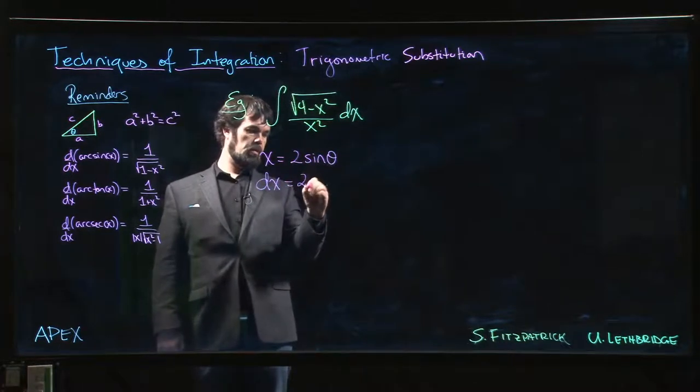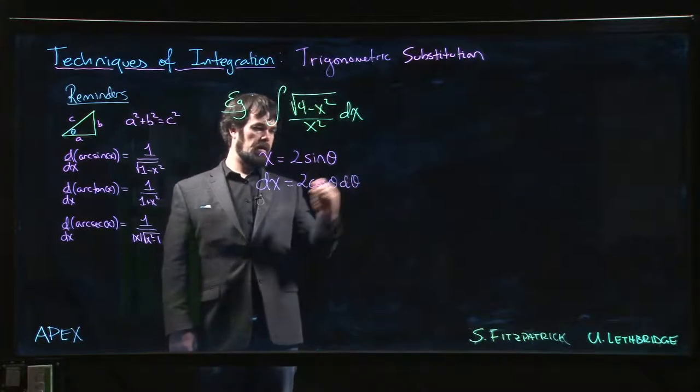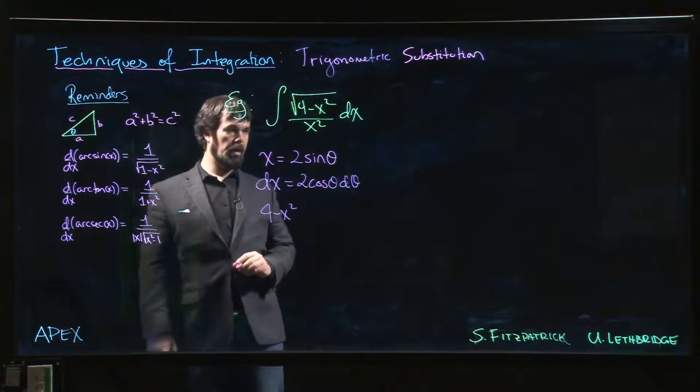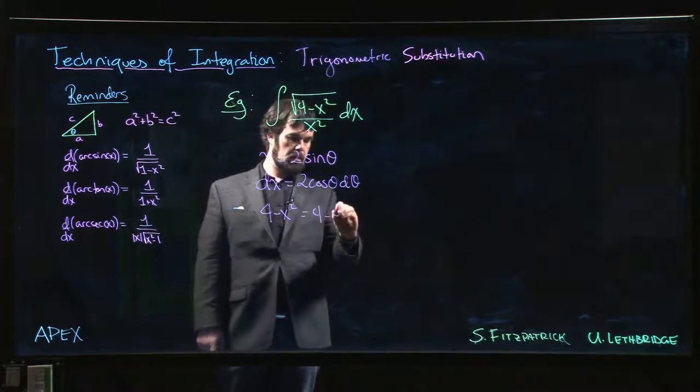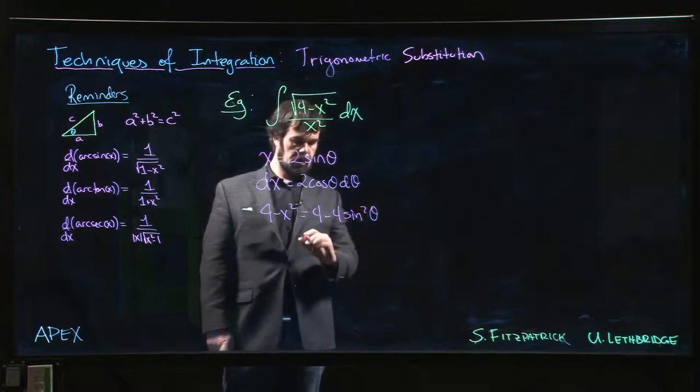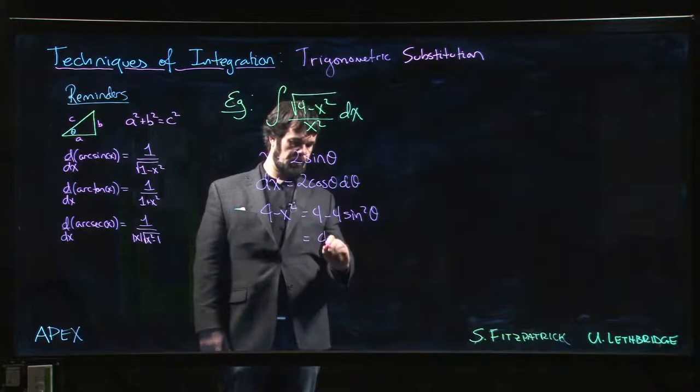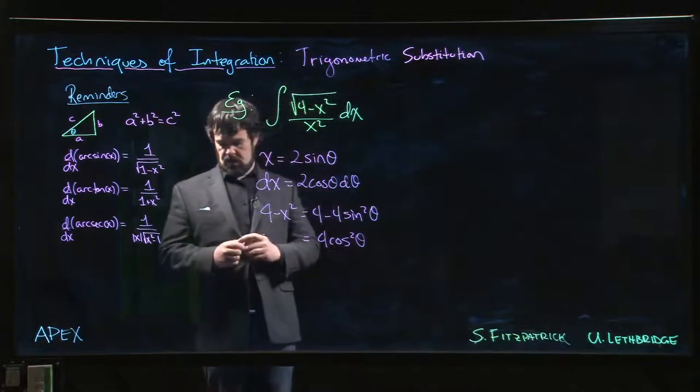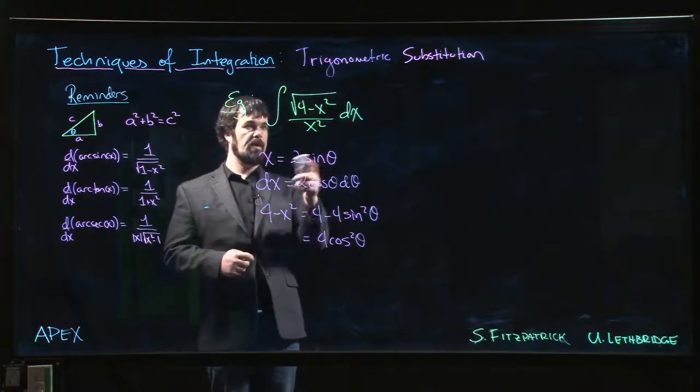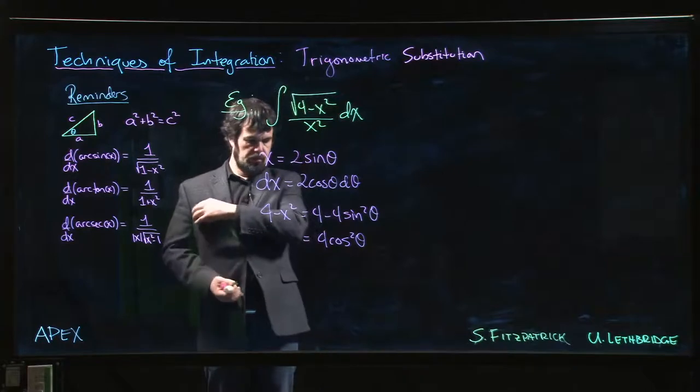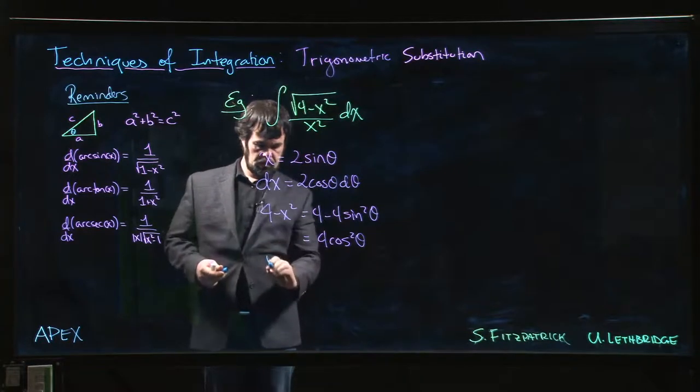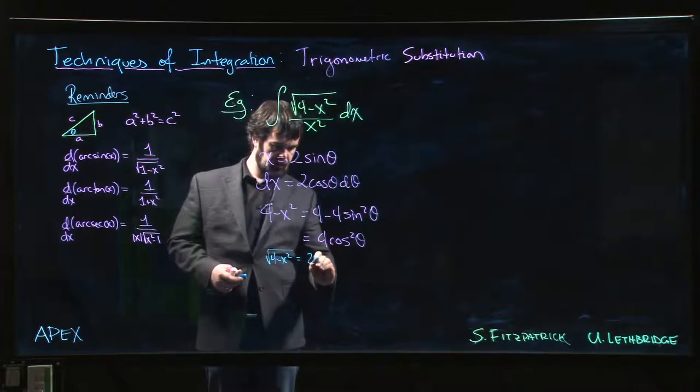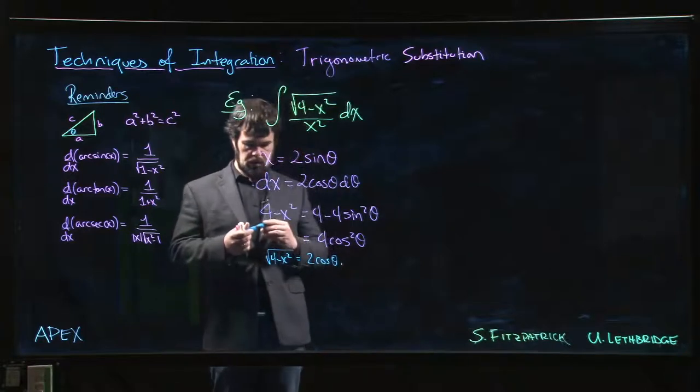So dx will be 2 cos theta d theta. And when I do 4 minus x squared, I get 4 minus 4 sine squared theta. Factor out the 4, this is of course 4 cos squared theta. And so in particular, if I care about that square root, you might notice that the square root of 4 minus x squared is 2 cos theta.